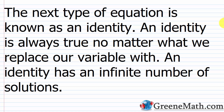The next type of equation is known as an identity. An identity is always true no matter what we replace our variable with — whether it's a billion, negative 2, 4, 27, or negative one-fourth — it does not matter, it will always be true. The key thing is that an identity has an infinite number of solutions.